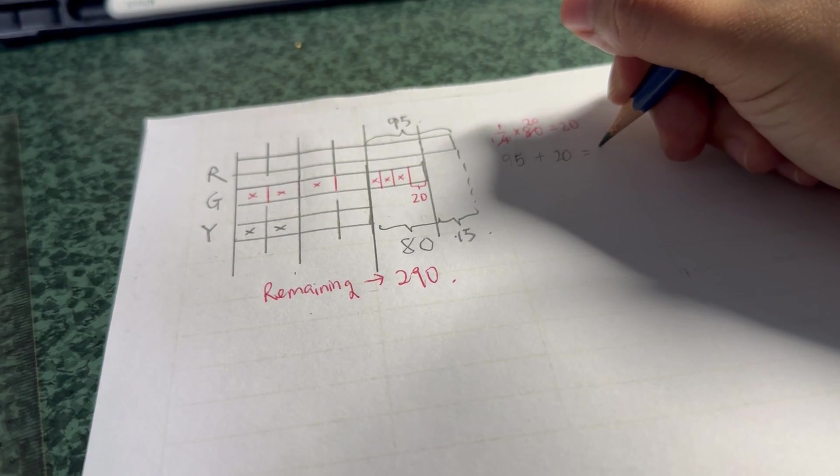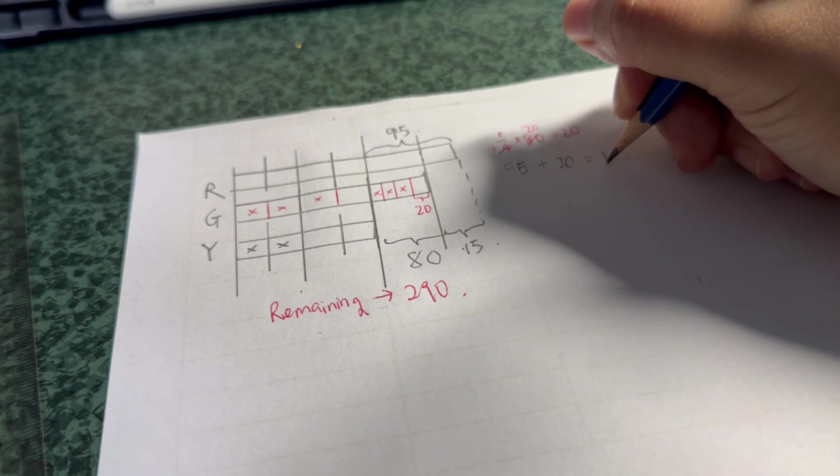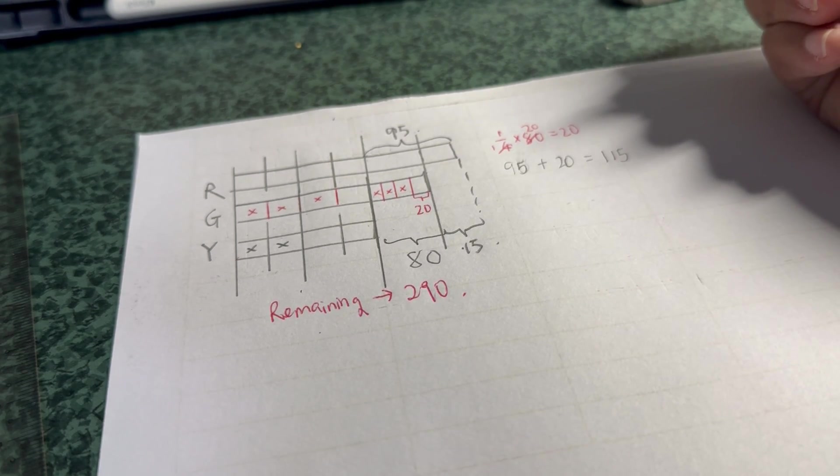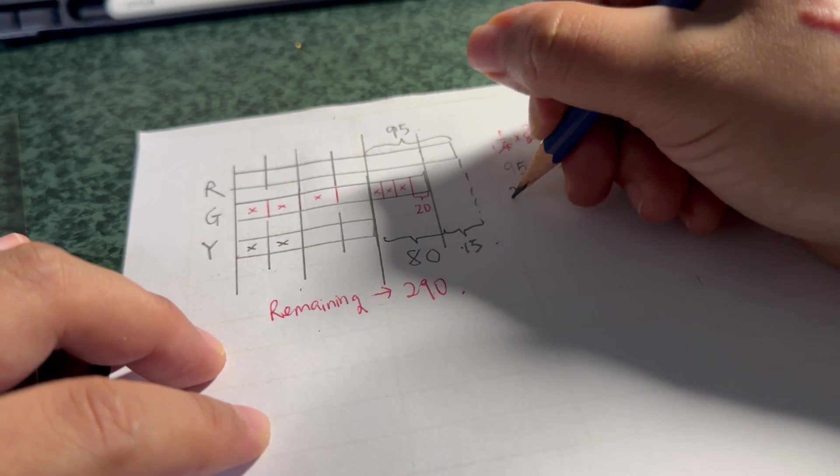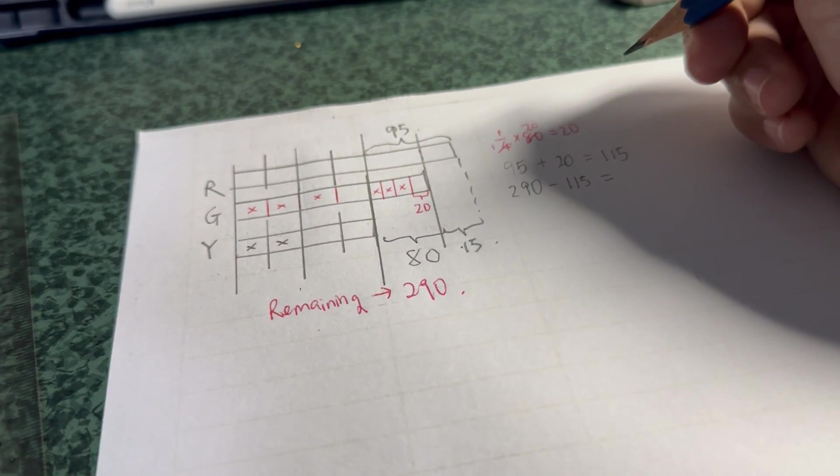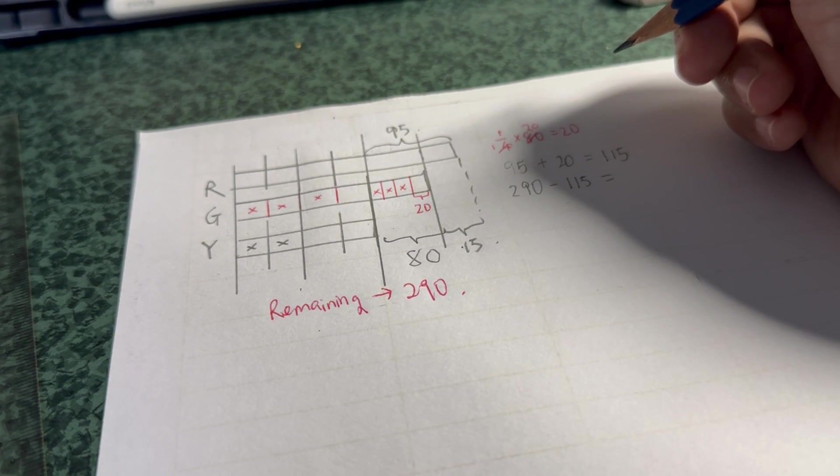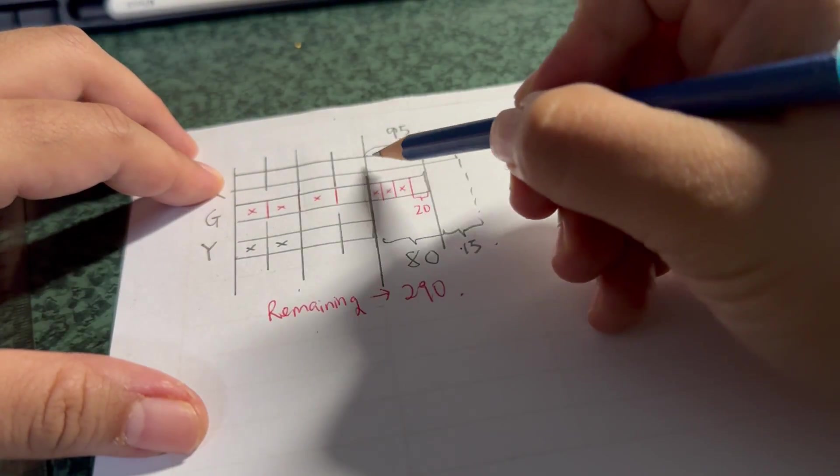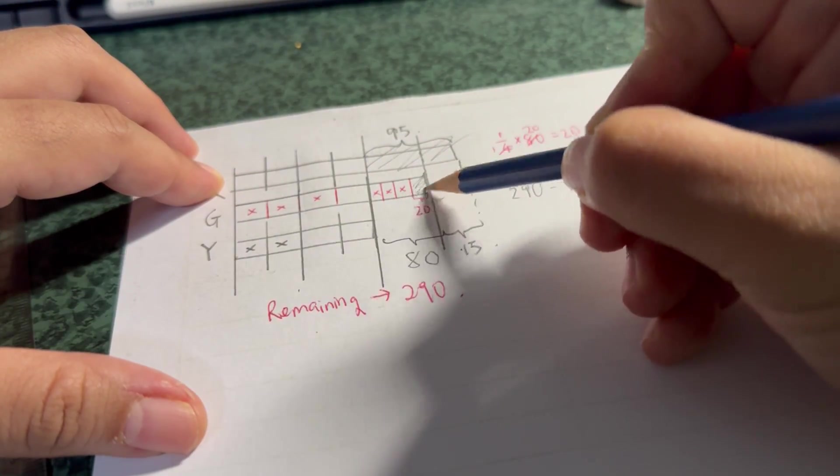Let me check. 95 plus 20, yep. Okay, so now I'm going to take 290 minus 115. Answer: 175. So now I've already taken away this part and this part.